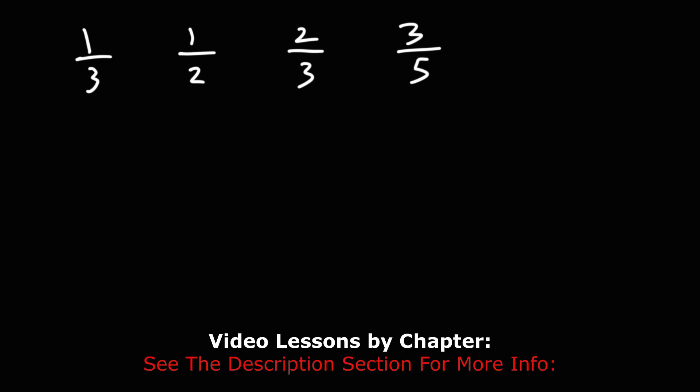In this video, we're going to talk about how to order fractions from least to greatest. What we need to do is get common denominators. So we're going to multiply the different numbers on the bottom to get a common denominator.